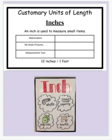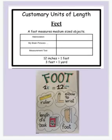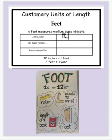Let's take a look at feet. Feet is used to measure medium-sized objects. Again, you can use an abbreviation when using your unit of measure in feet. The abbreviation for feet would be 'ft.' When your brain pictures what a foot looks like, you could use a ruler because a ruler is one exact foot.